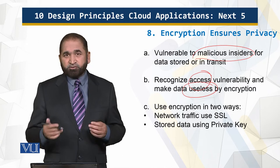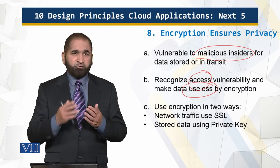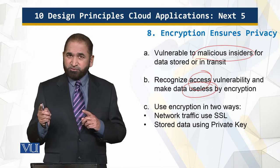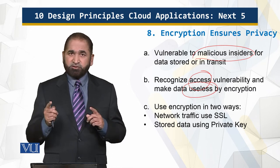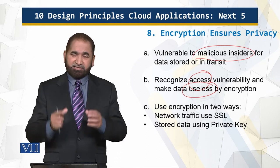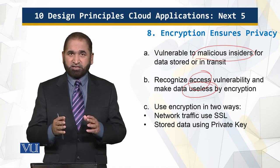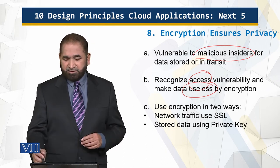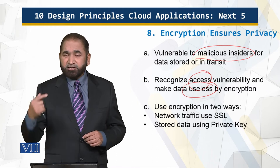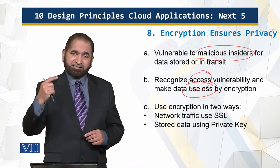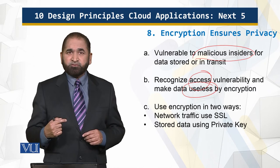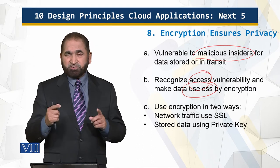You use encryption in two ways: when data is in transit, you use the Secured Socket Layer (SSL); and when data is at rest — meaning stored on the hard disk — you use encryption where the private key is at your premises. The data is at the cloud, but the private key is with you, so you ensure the security of your data.